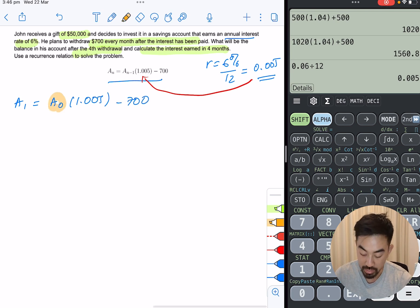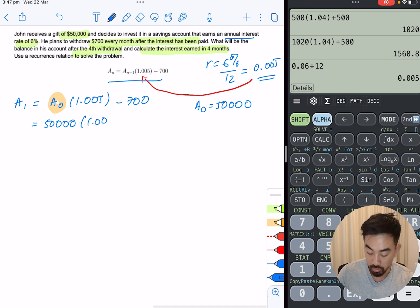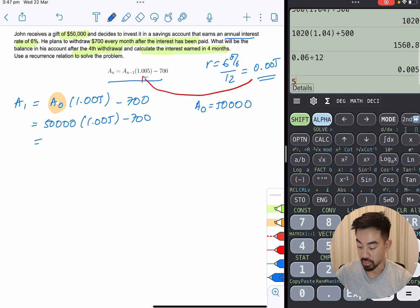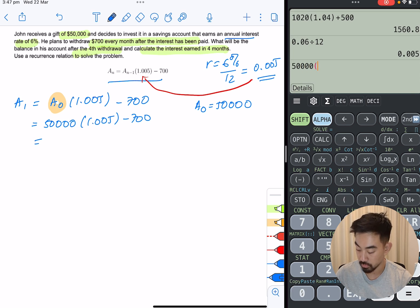All right. So here we go. So A1 is going to be the previous month times 1.005 minus 700. Now you might be asking, what is A0? Well, A0 is going to be the starting amount. So what's the starting amount? A0 is 50K or 50,000. That's the starting amount. So 50,000 times 1.005 minus 700. Put that in the calc. So after the first withdrawal, he's going to have $49,550.